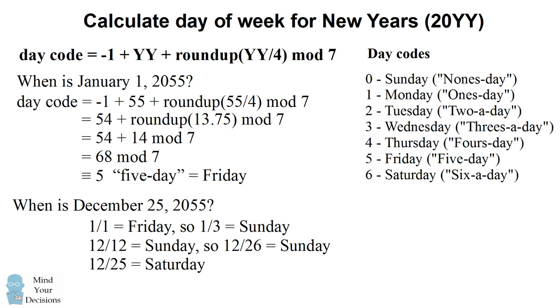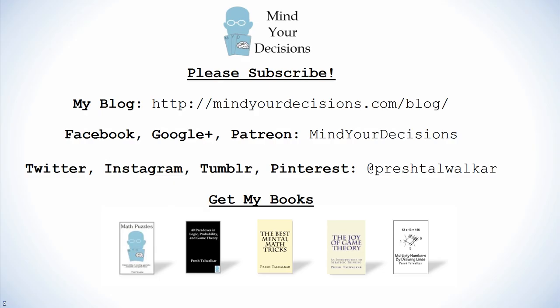The Doomsday Method is a very cool way that you can mentally calculate any date, and you'll be very surprised how often this comes in handy. Other people will be surprised how quickly you'll be able to know the day of the week just from the date. Thanks for watching this video. Please subscribe to my channel — I make videos on math and game theory. You can catch me on my blog, Mind Your Decisions, which you can follow on Facebook, Google+, and Patreon, and on social media at Presh Talwalkar. If you like this video, please check out my books — there are links in the video description.